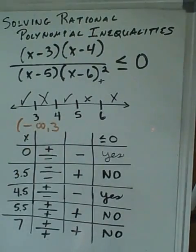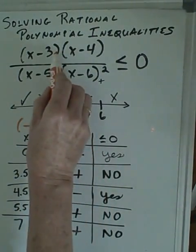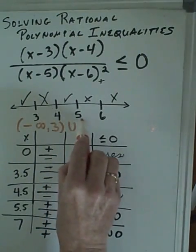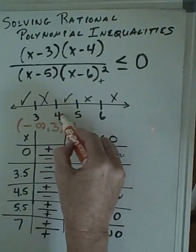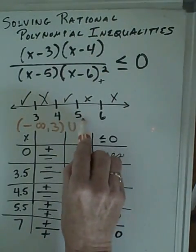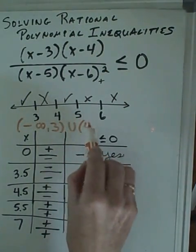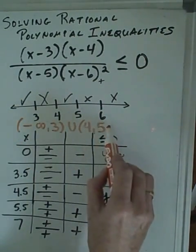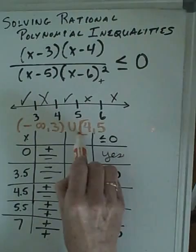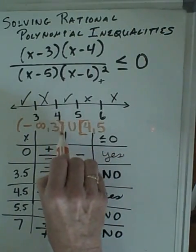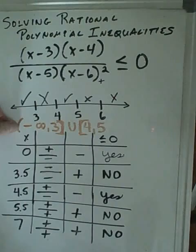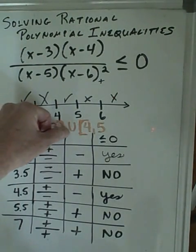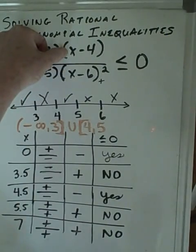So our solution to this problem would be that from negative infinity up to 3. Remember, we never include negative infinity, and we can include 3 because 3 is in the numerator. In union with, and we can include 4 because that's where it starts, because 4 is in the numerator, all the way up to 5.